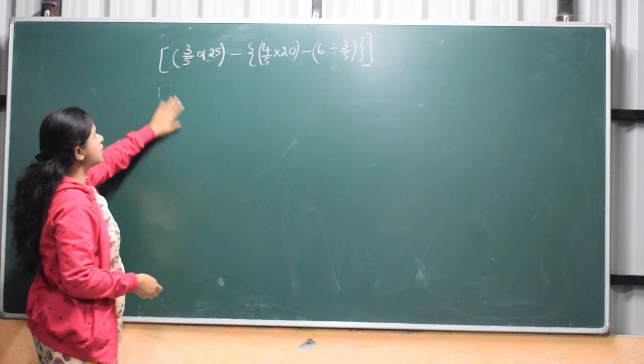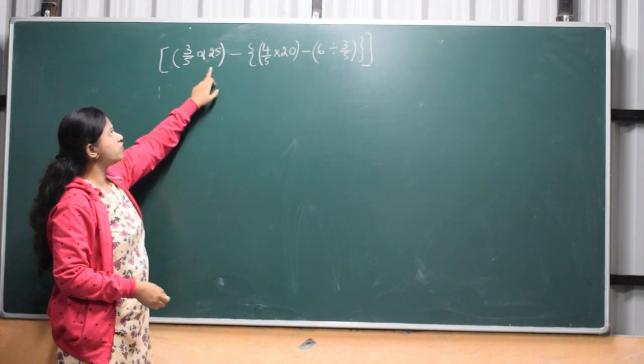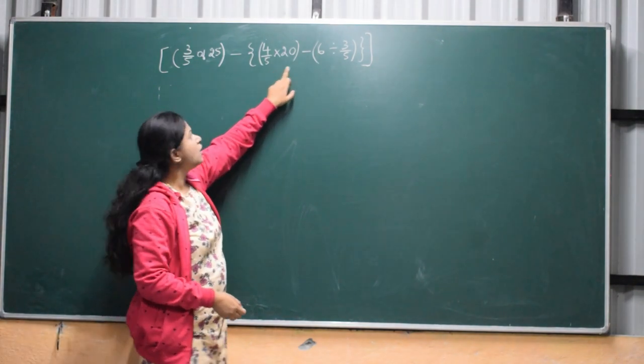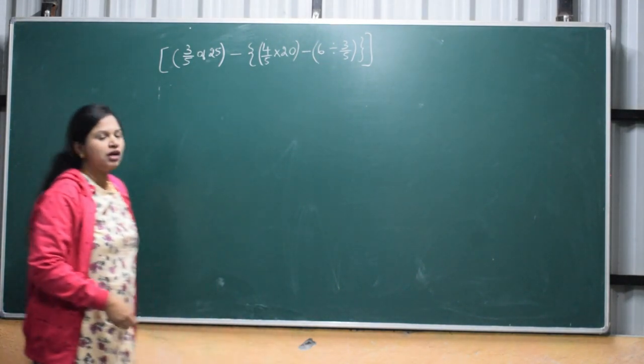The problem is 3 by 5 of 25, bracket, minus 4 by 5 into 20 minus 6, divided by 3 by 5. This is the problem.